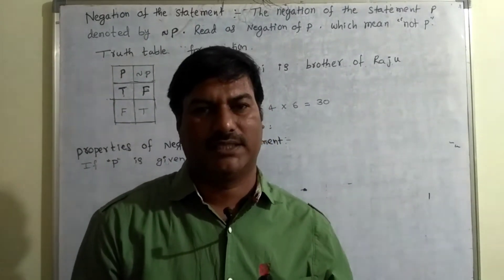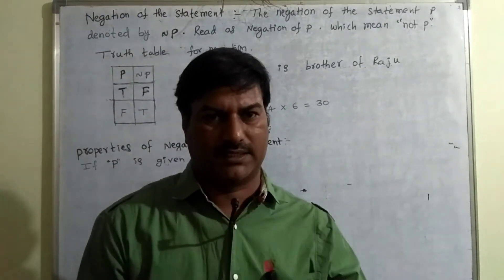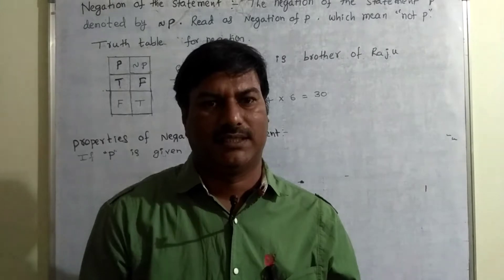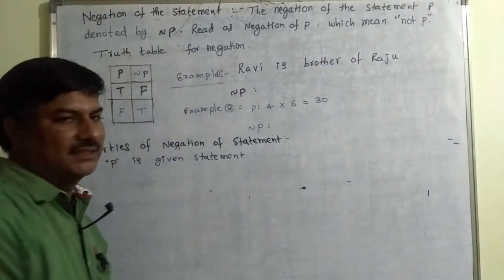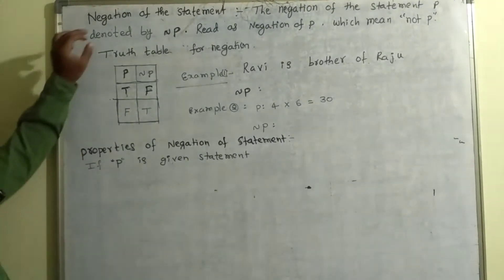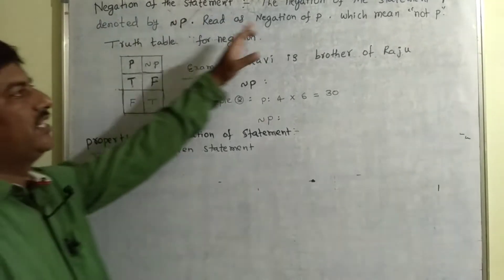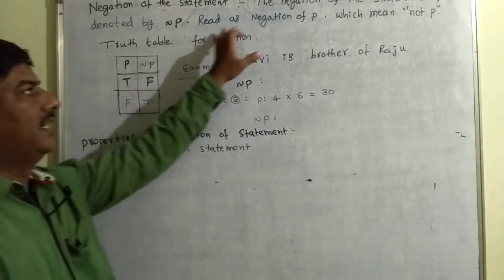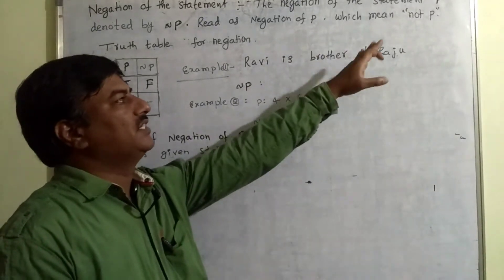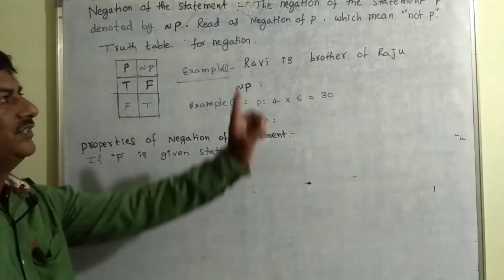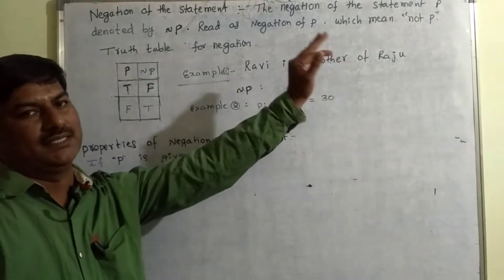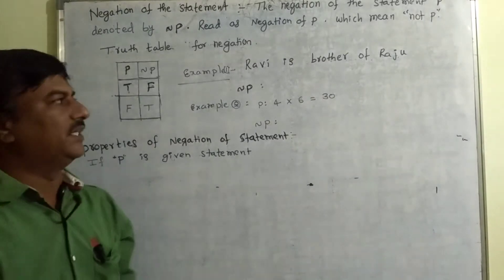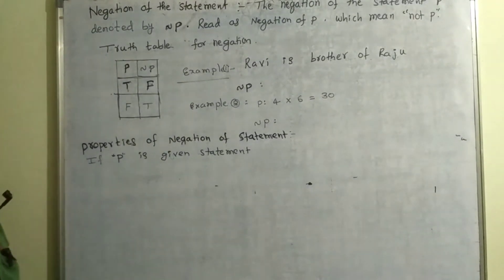We discussed the statement and open sentence in a previous session. In this video, we are going to discuss the negation of the statement, its definition, and its properties. The negation of statement P is denoted by negation of P, read as 'not P', which means we attach 'not' to the given statement to form its negation.